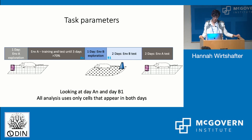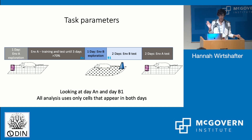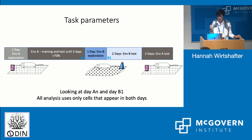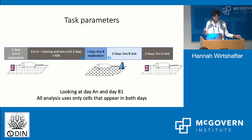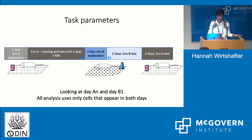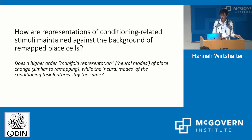The data I'm going to show today is from one animal. He has one day in environment A — the rectangle — where he just explores, with no conditioning. Then he's trained in environment A with the tone and the shock until he reaches over 70% in three consecutive days. We're mostly going to be looking at the last day of that, which I'll call Day AN. Then he gets switched to environment B, where he again has a day of exploration, and then gets tested for two days. We're looking at the first day of that, which is B1. So the key comparison is Day AN — the last day in environment A — and B1 — the first day in environment B. The big question is how are representations of the conditioning-related stimuli and the learning of the task maintained against the background of remapped place cells?